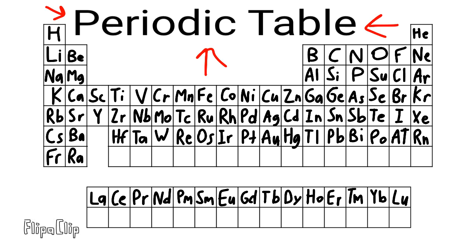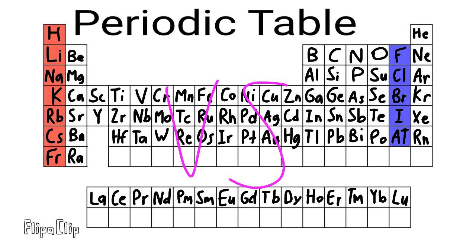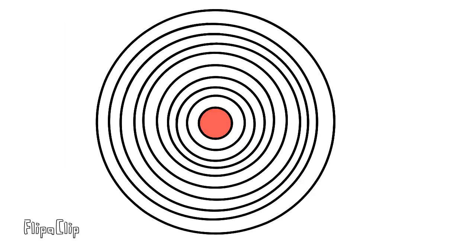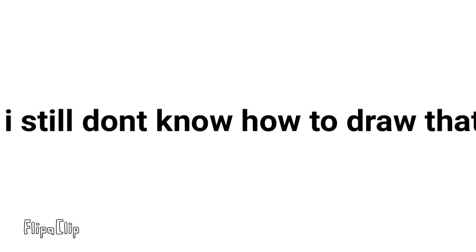This is the periodic table, noble gases stable, halogens and alkali react aggressively, each period will see new outer shells, more electrons are added moving to the right.